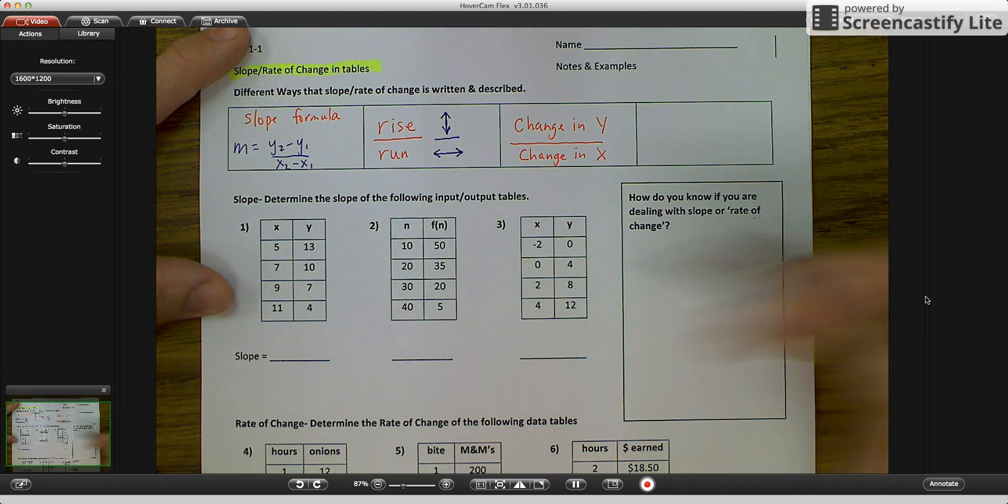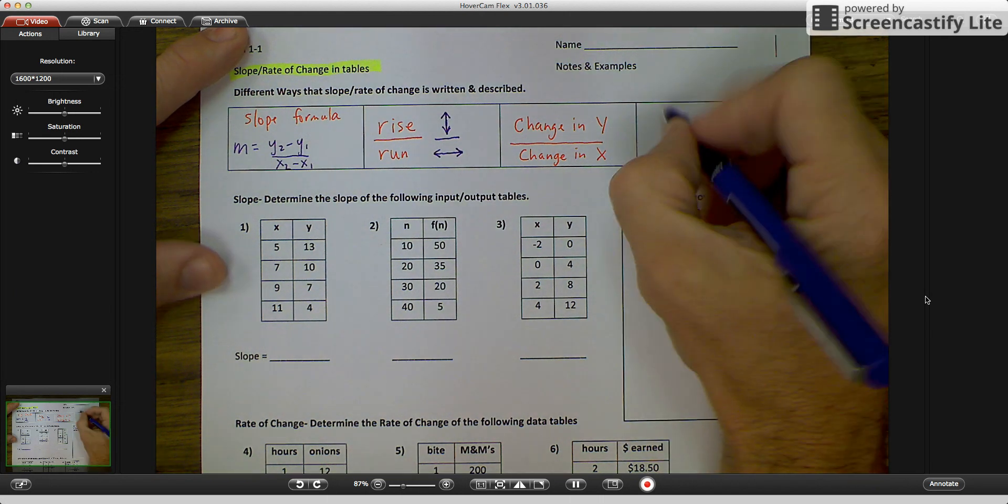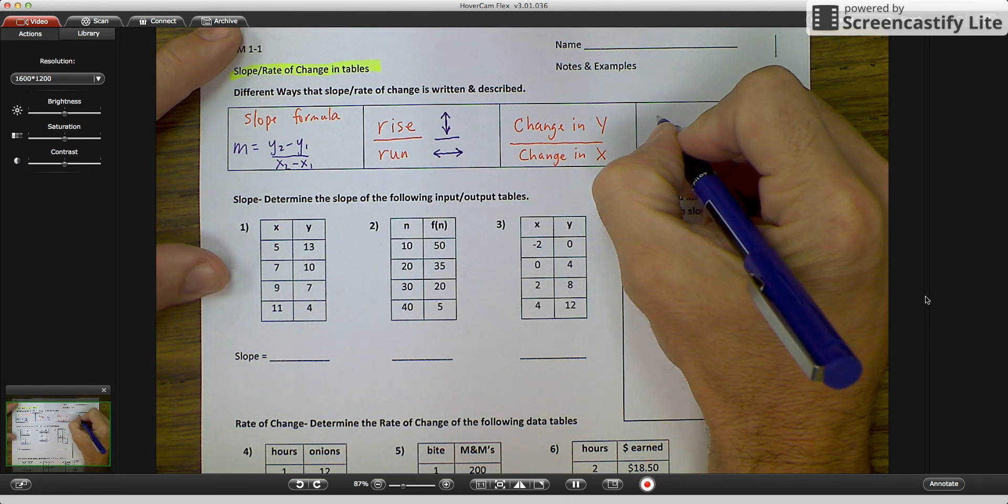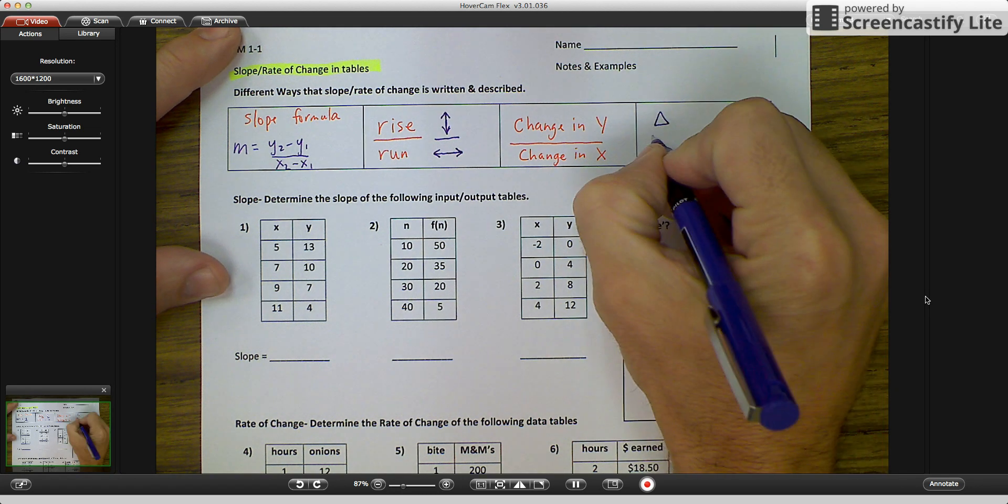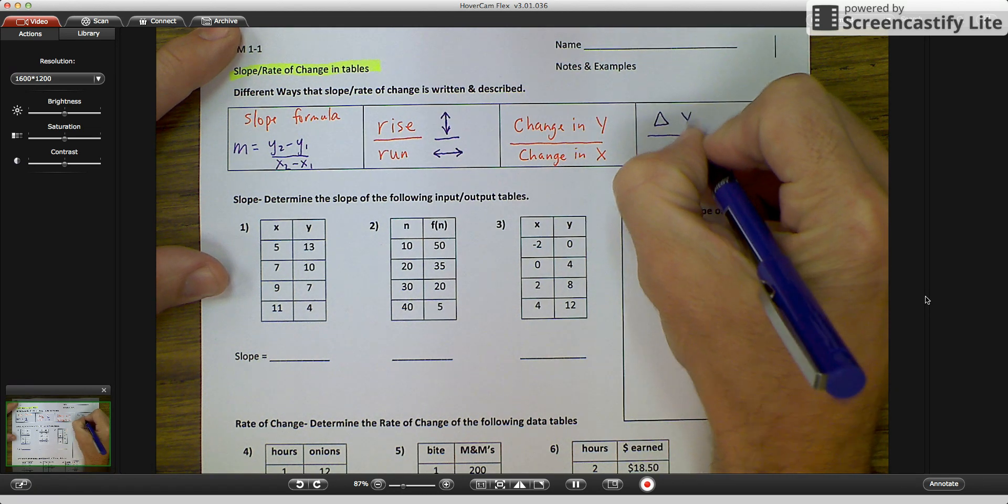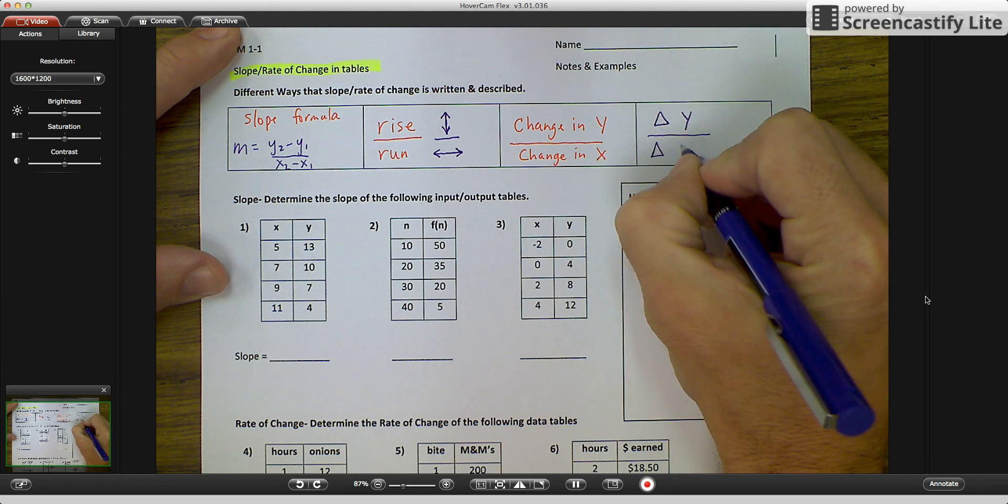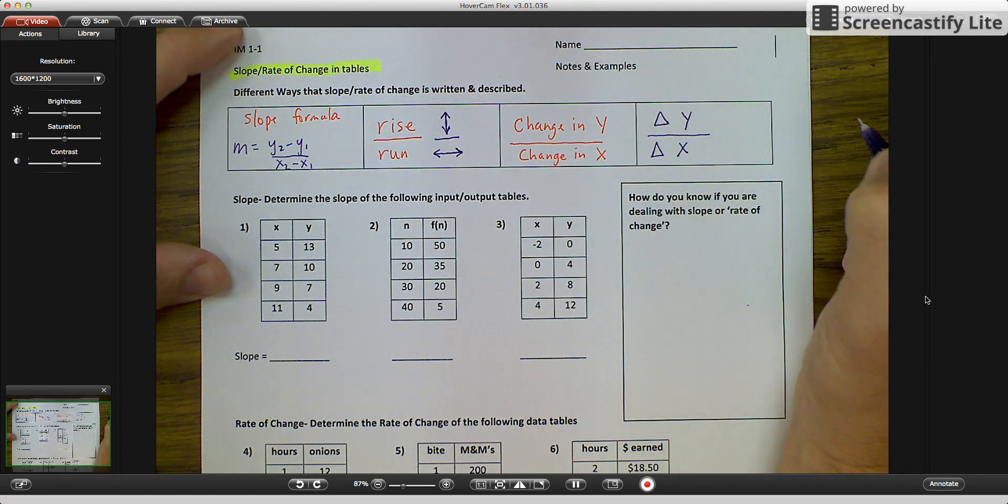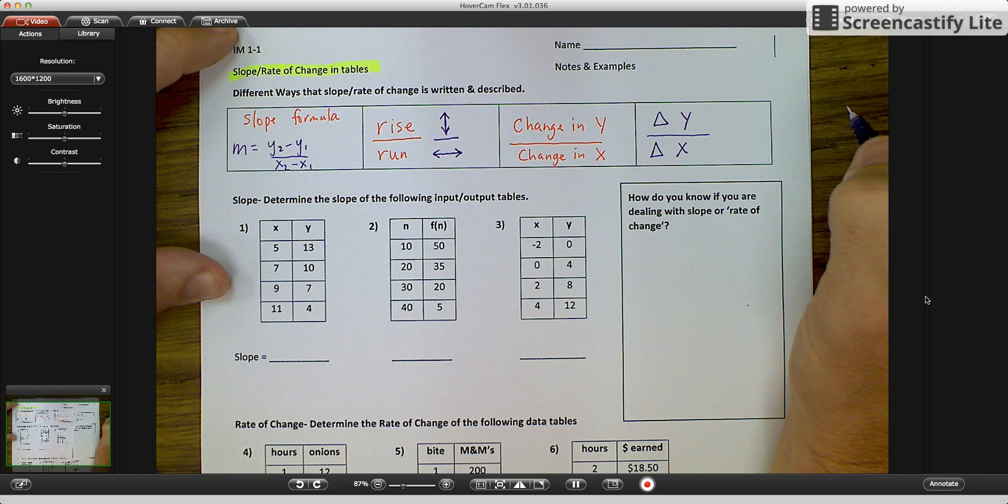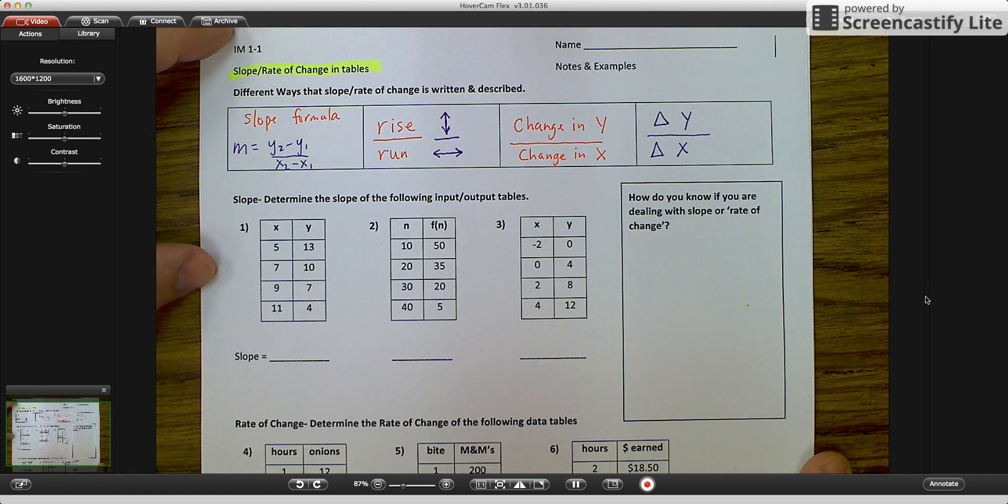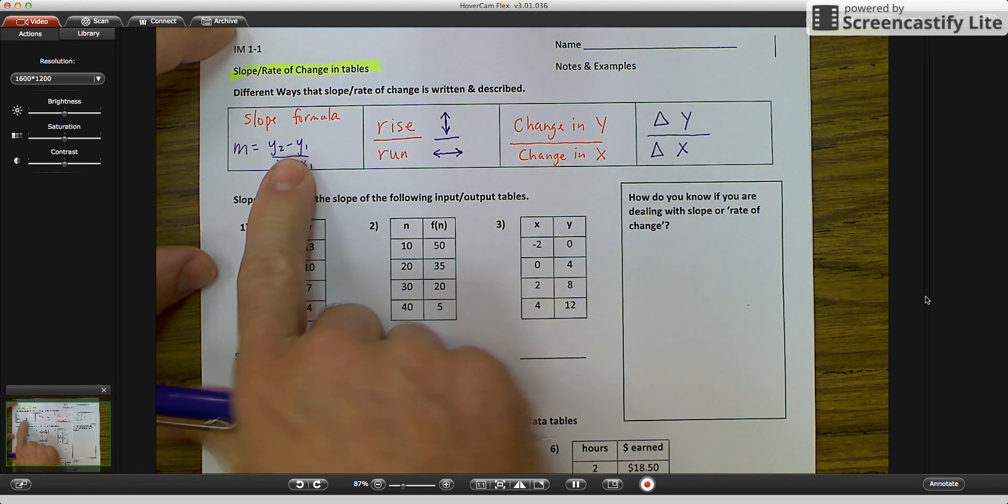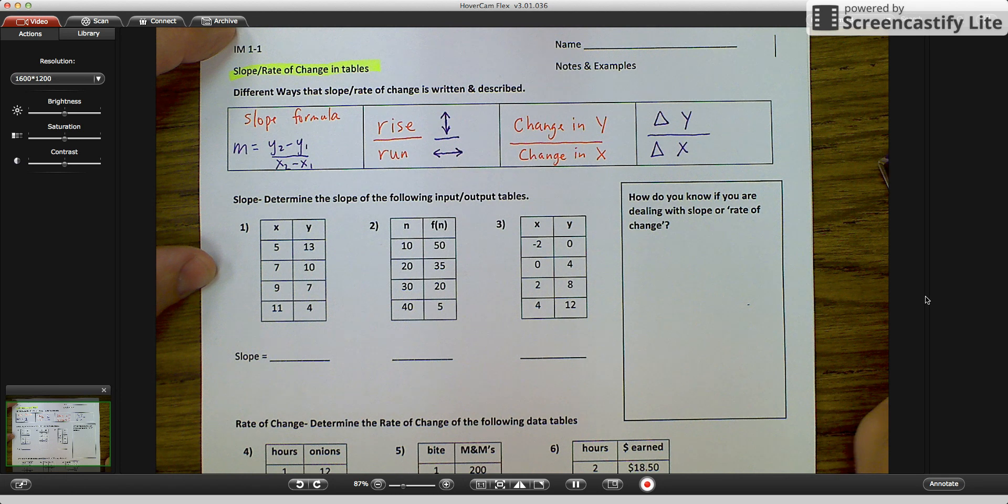And then the third way, or the final way, is I'm going to introduce you to a Greek letter. And this Greek letter is called delta. So it's delta y over delta x. You're going to use this in chemistry and physics if you ever take physics. And that just talks about the change in y over the change in x. So all four of these options are just talking about the change in y over the change in x.